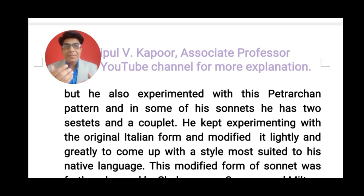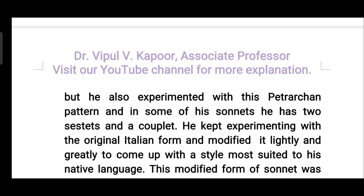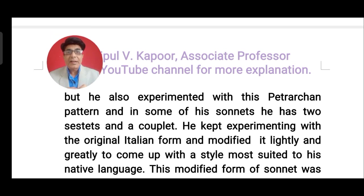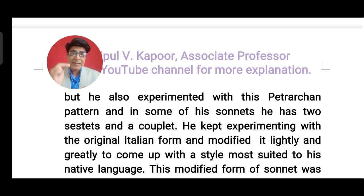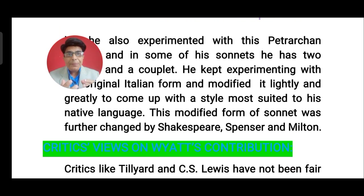Wyatt tried to do some experiments with the form. Later on, he changed the pattern of sestet and octave. Instead of one sestet and one octave, he started writing two sestets — that is, two stanzas of six lines, making 12 lines — and one couplet at the end. So he experimented with the original Italian form and modified it to suit the audience of British society.